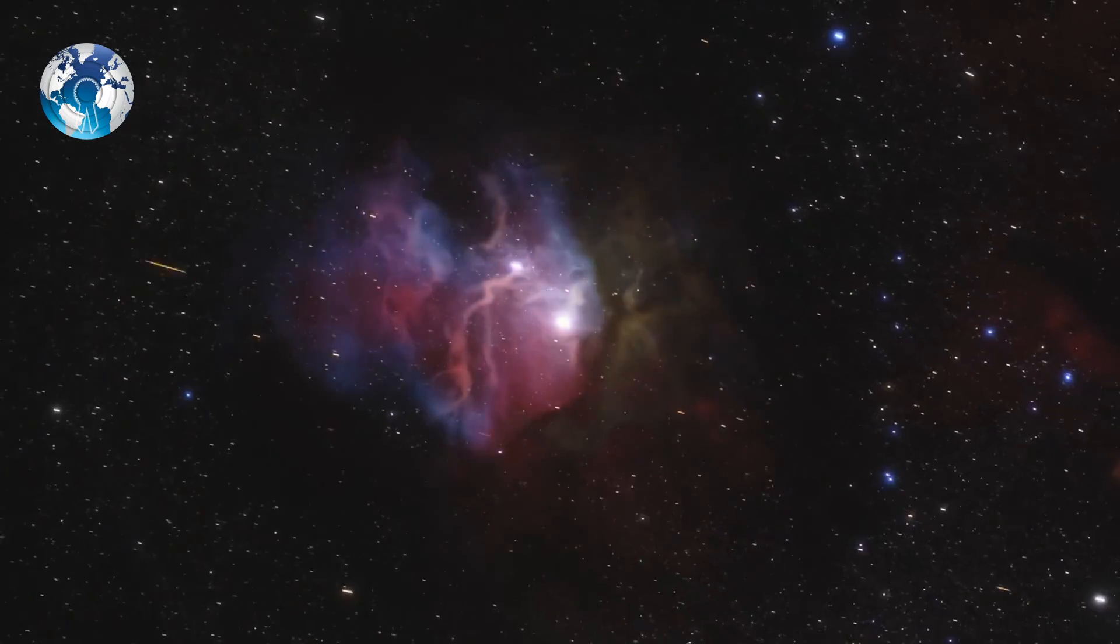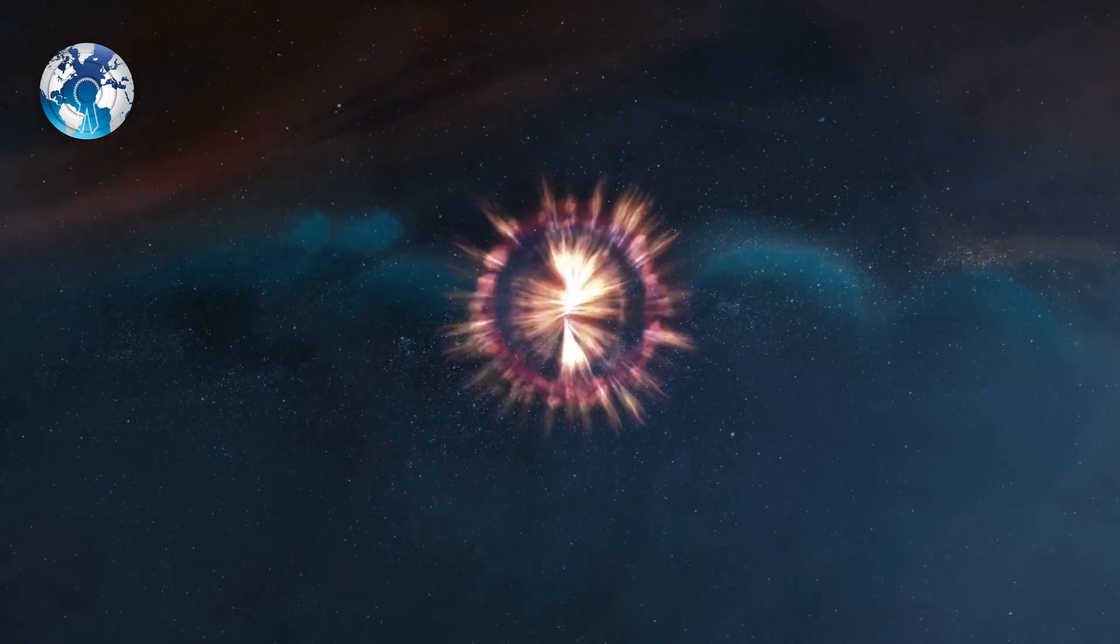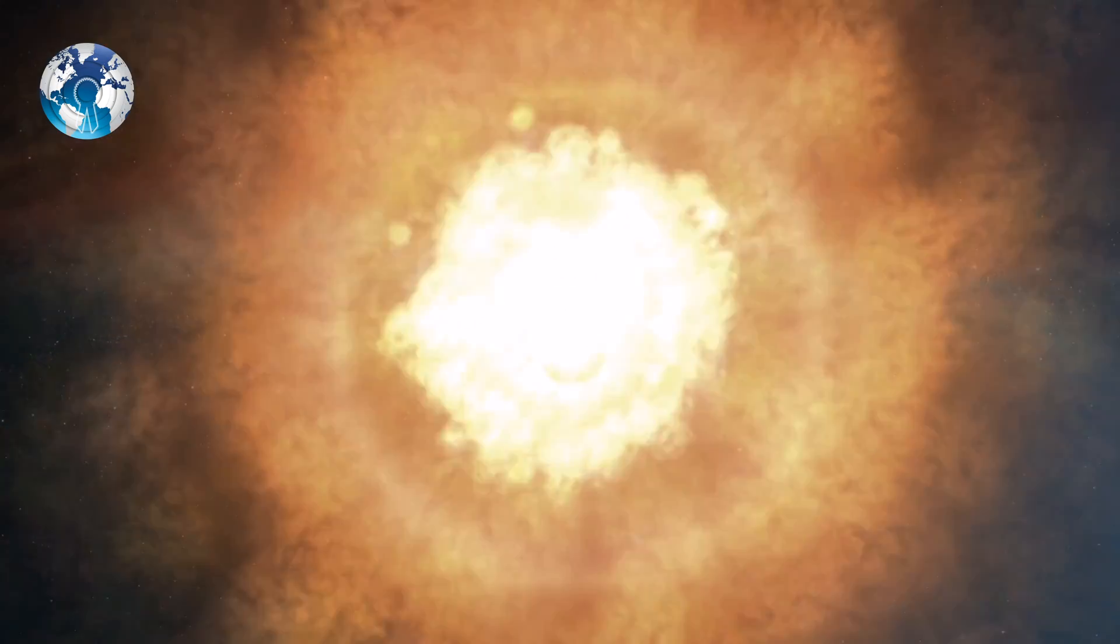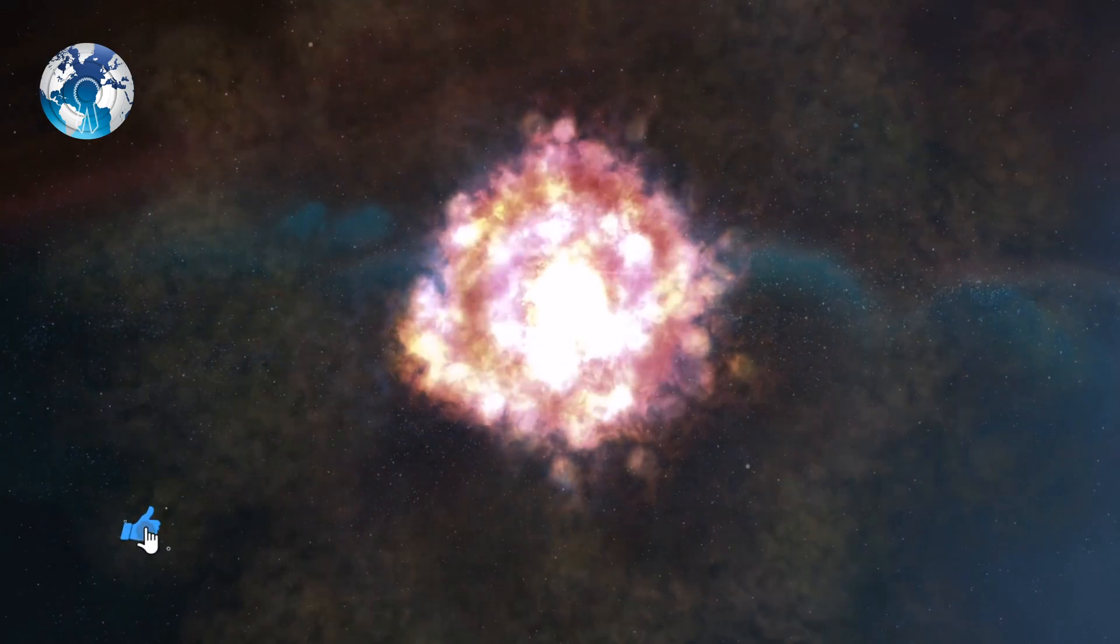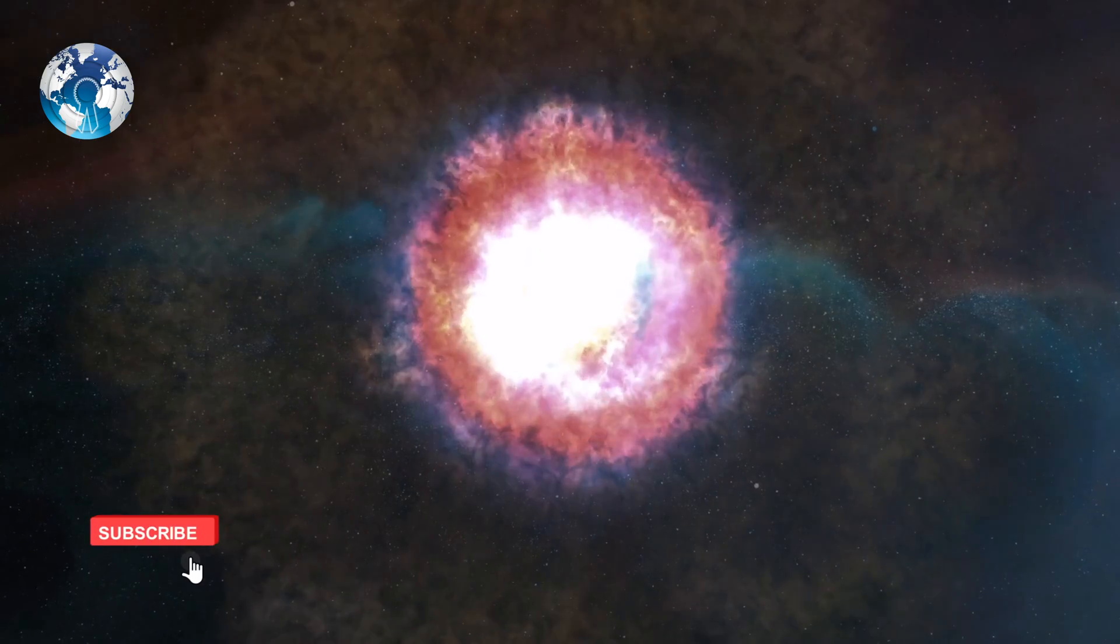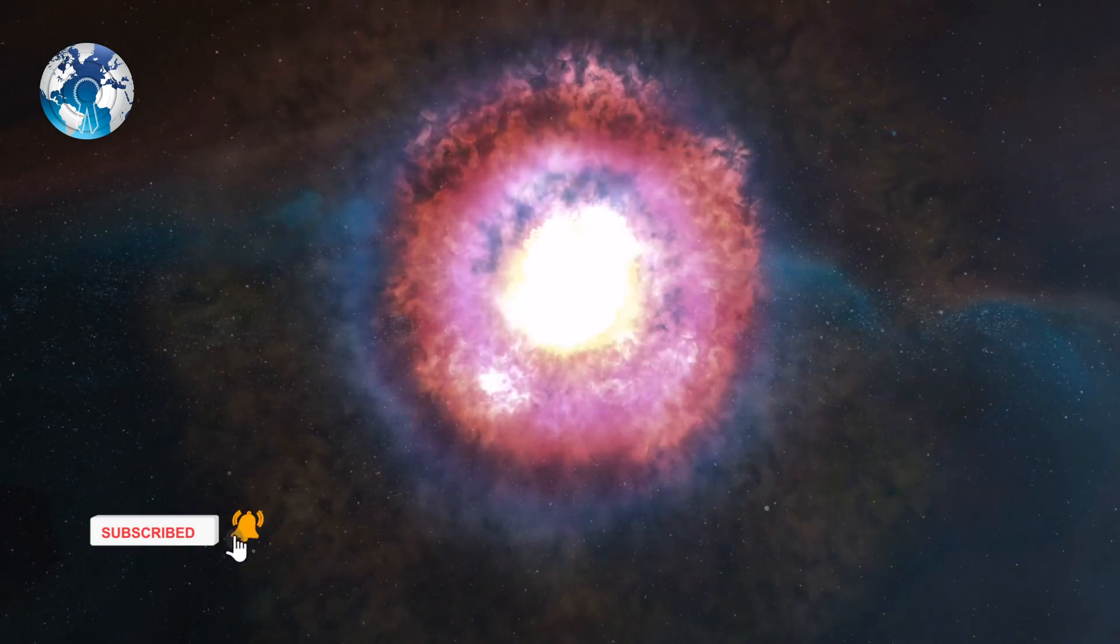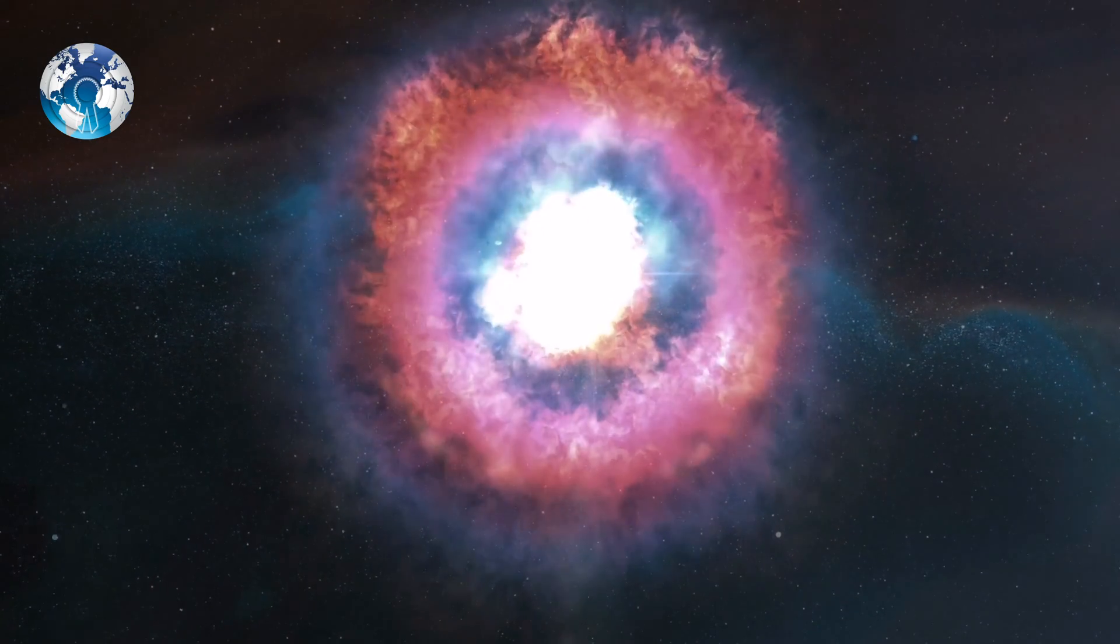But the team said it found bright radiation from the observed red supergiant in the year before its death. That radiation suggests that there were significant changes in the internal structures that caused a violent ejection of gas just before its collapse.